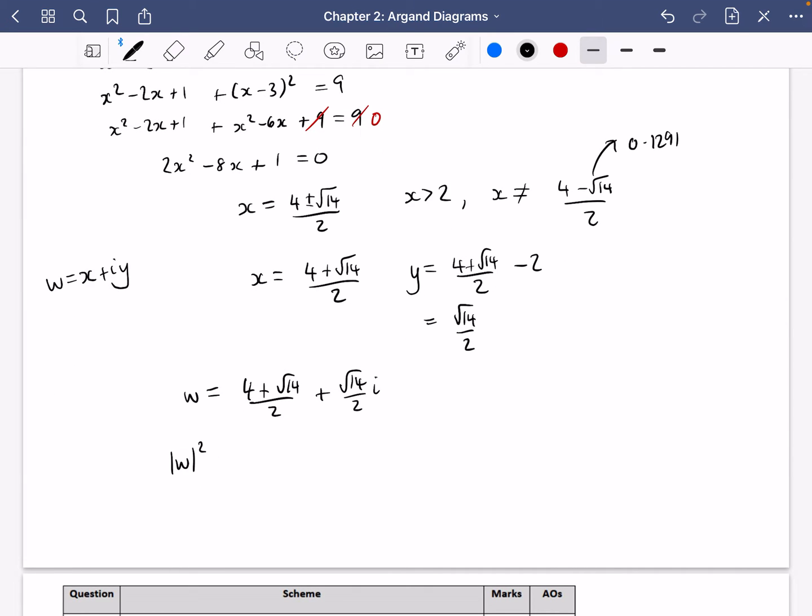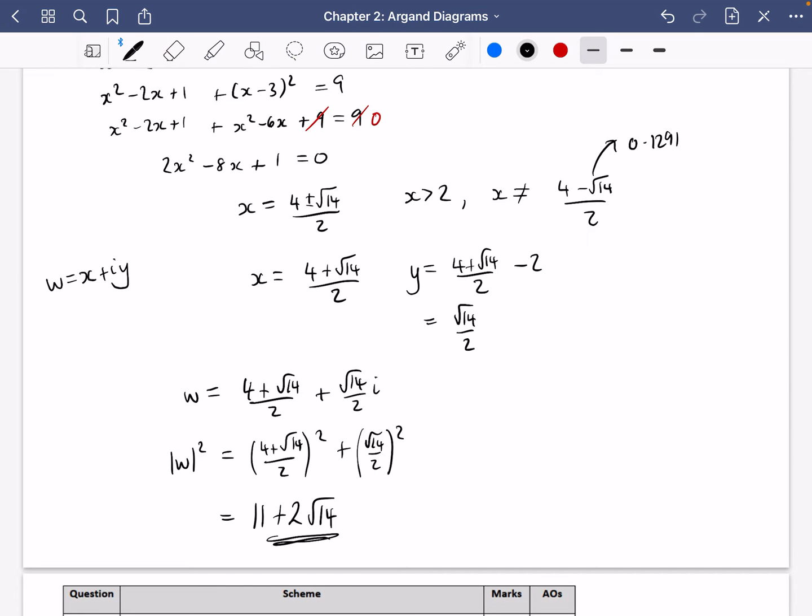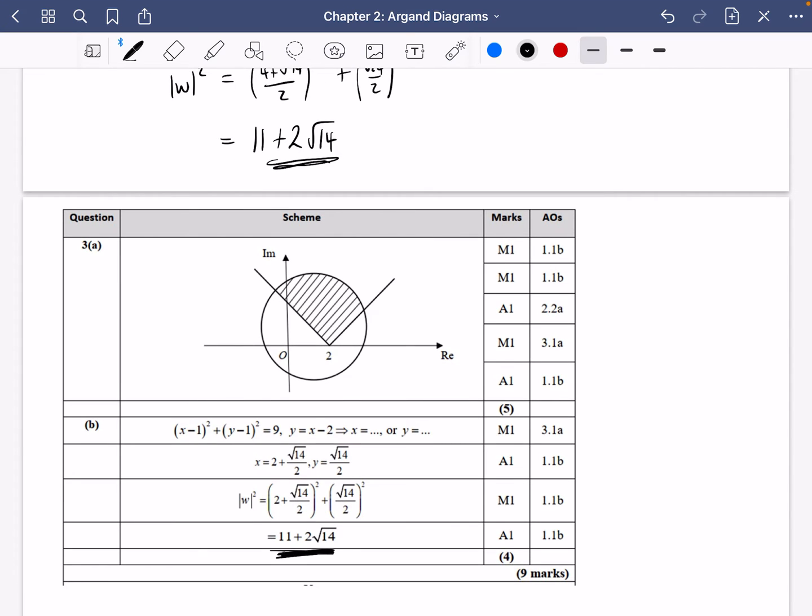So we're going to find out the modulus of w, all squared. Now because it's all squared, that means I don't need to include the square root sign. So it's just going to be 4 plus root 14 over 2, all squared, plus root 14 over 2, all squared. So you can try this yourself, but I'm going to do 4 plus root 14 over 2, squared, plus the root 14 over 2, squared, and we get 11 plus 2, root 14. Now if I saw that number, I'd probably be thinking, oh gosh, something's gone wrong with this question. But you will be pleased to see that that is the correct answer, 11 plus 2, root 14.